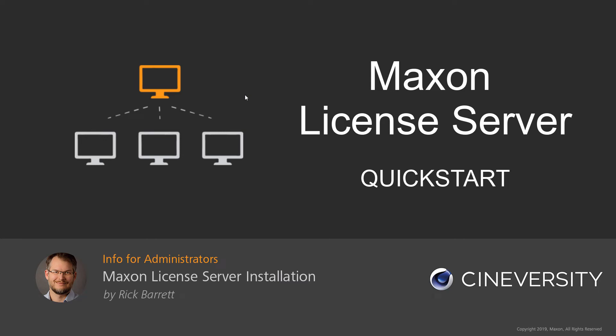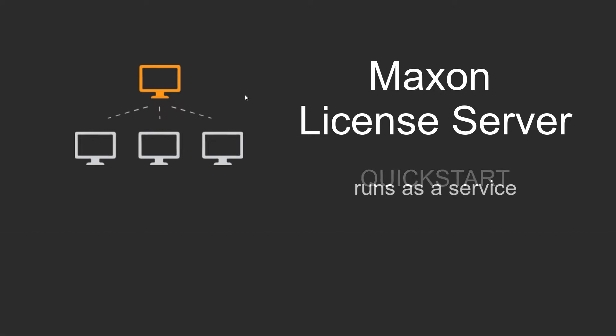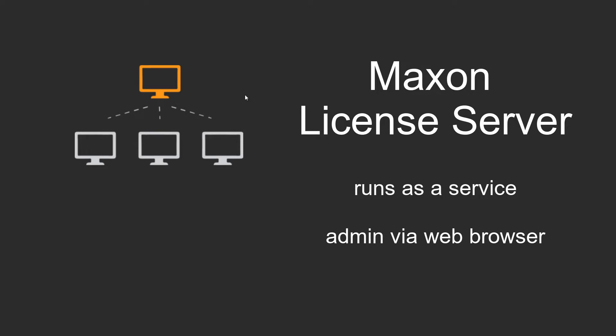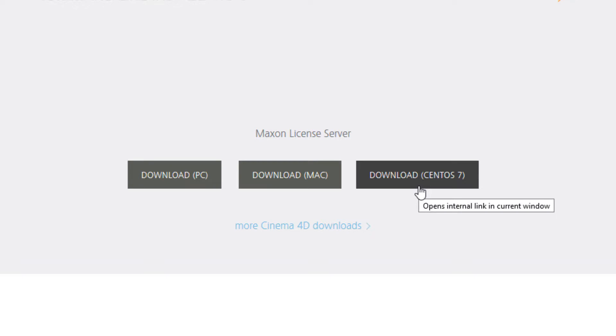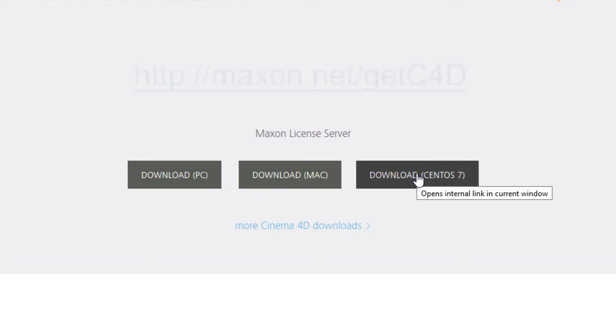With Maxon's new license server, you can share licenses of Cinema 4D and other Maxon products throughout your local network. The license server runs as a service and is administered via a web browser. The clients don't need MyMaxon accounts and they don't need to be online, but the license server does need to be online. The license server itself is currently available on Windows, Mac, and the CentOS Linux distribution.